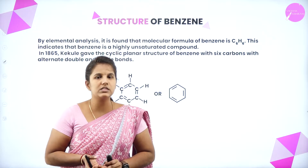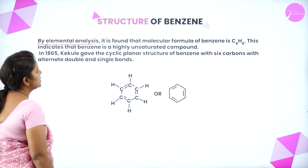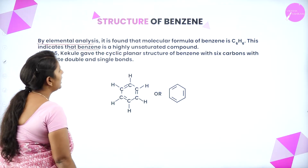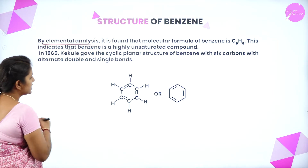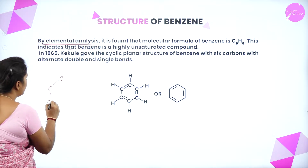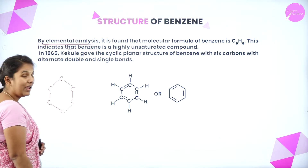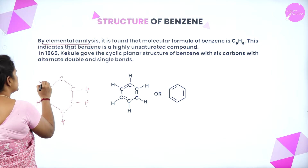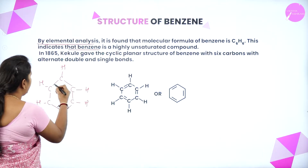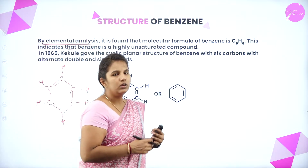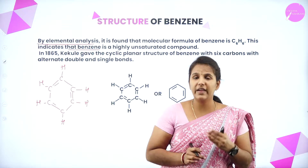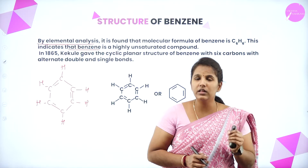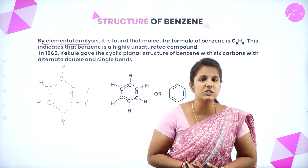What is the structure of benzene, and who discovered it? By elemental analysis, the molecular formula of benzene was found to be C6H6, indicating it is a highly unsaturated compound. There are six carbon atoms, each bonded to only one hydrogen atom. The remaining bonds of each carbon are balanced by writing double bonds between adjacent carbon atoms, indicating a high degree of unsaturation.